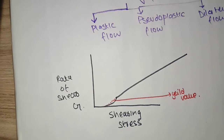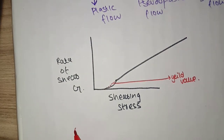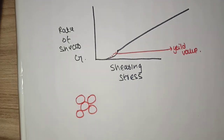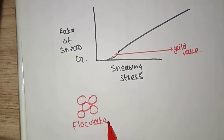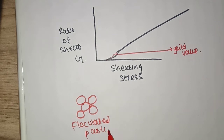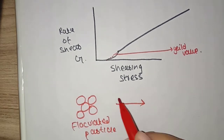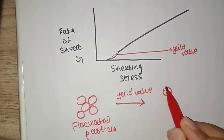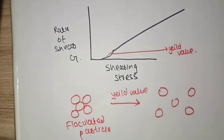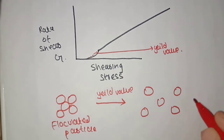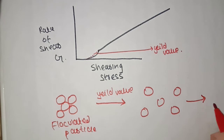We have a very important property for dispersion which is reciprocal mobility — the plastic viscosity. Plastic flow involves flocculated particles. When we apply stress, the distance between the particles increases. When we increase the stress beyond the yield value, the material starts to flow.